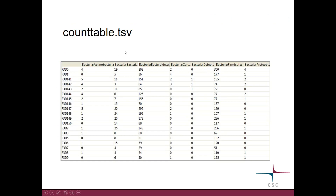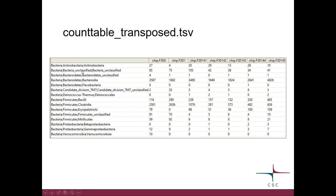The resulting count table file looks like this — here you have the samples, here you have the species, and then the counts for each species in each sample. The transposed table has exactly the same content, but has been tilted so that now you have the samples as columns.